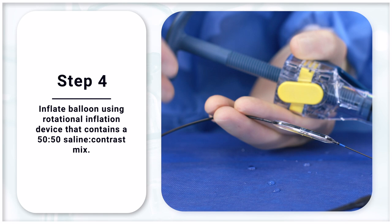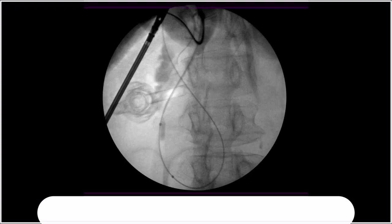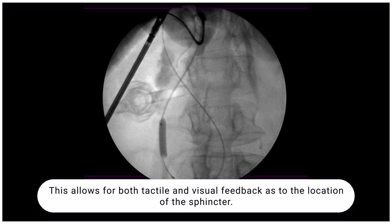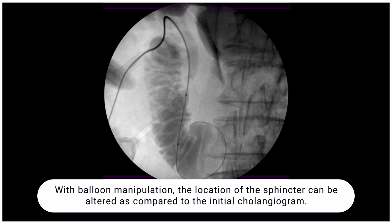Step 5: Pull back on the balloon gently to ascertain the exact location of the sphincter complex. This allows for both tactile and visual feedback as to the exact location of the sphincter. With balloon manipulation, the location of the sphincter can be altered as compared to the initial plane jiggering.